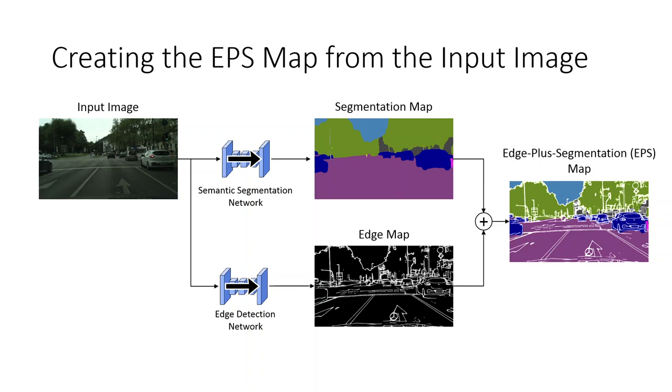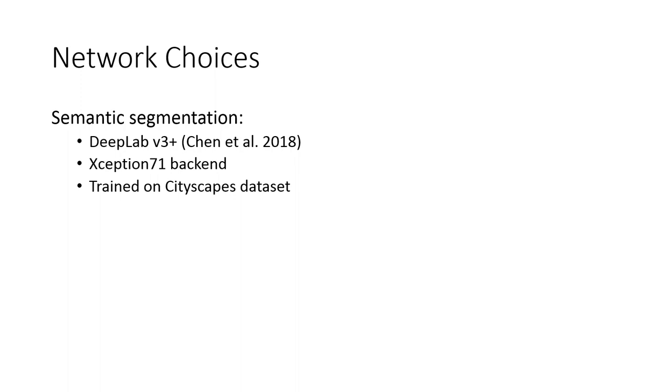EPS maps are a compact representation of the geometry and types of the objects in the scene. In other words, they represent a morphologic segmentation of the scene. The two networks responsible for generating the EPS maps are in principle interchangeable and may be exchanged depending on the use case.